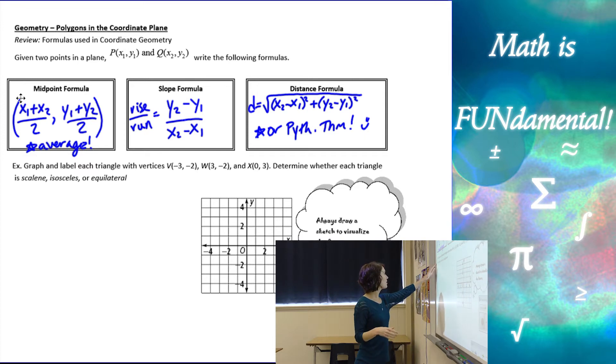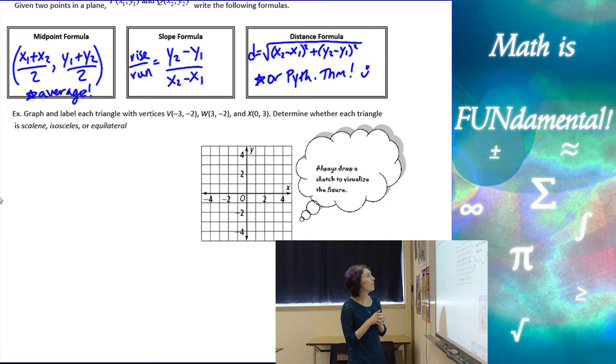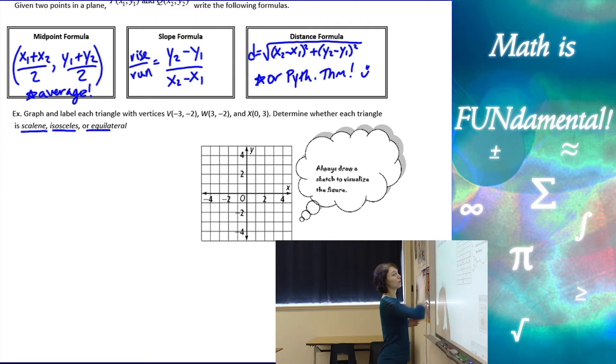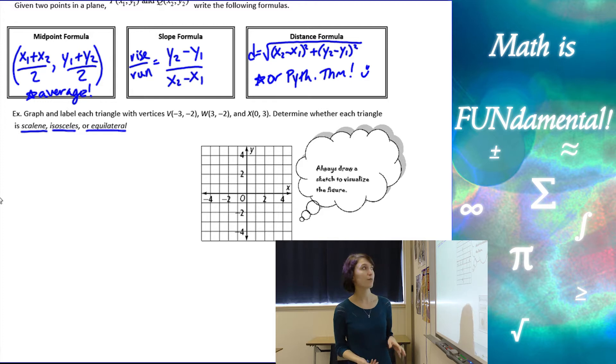Alright, so let's look at a couple examples here. The first one is graph and label each triangle with the three vertices, and then determine whether the triangle is scalene, isosceles, or equilateral. So that's our goal. We're trying to figure out which type of triangle this is by our graph.